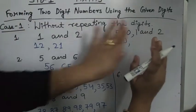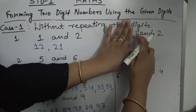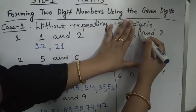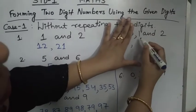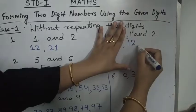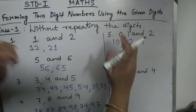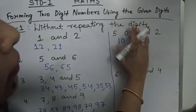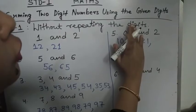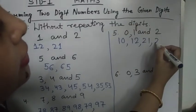Cover 0 and we get 1 and 2. Make numbers with 1 and 2: we get 12 and 21. Now cover 1 — we get 2, 0 — that is 20.